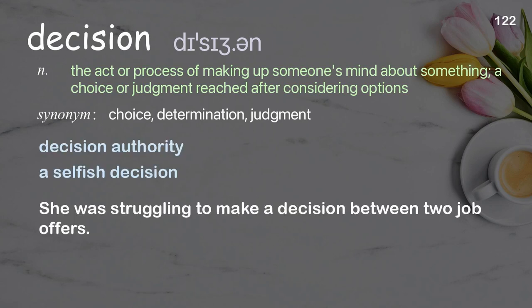Examples: Decision authority. A selfish decision. She was struggling to make a decision between two job offers.